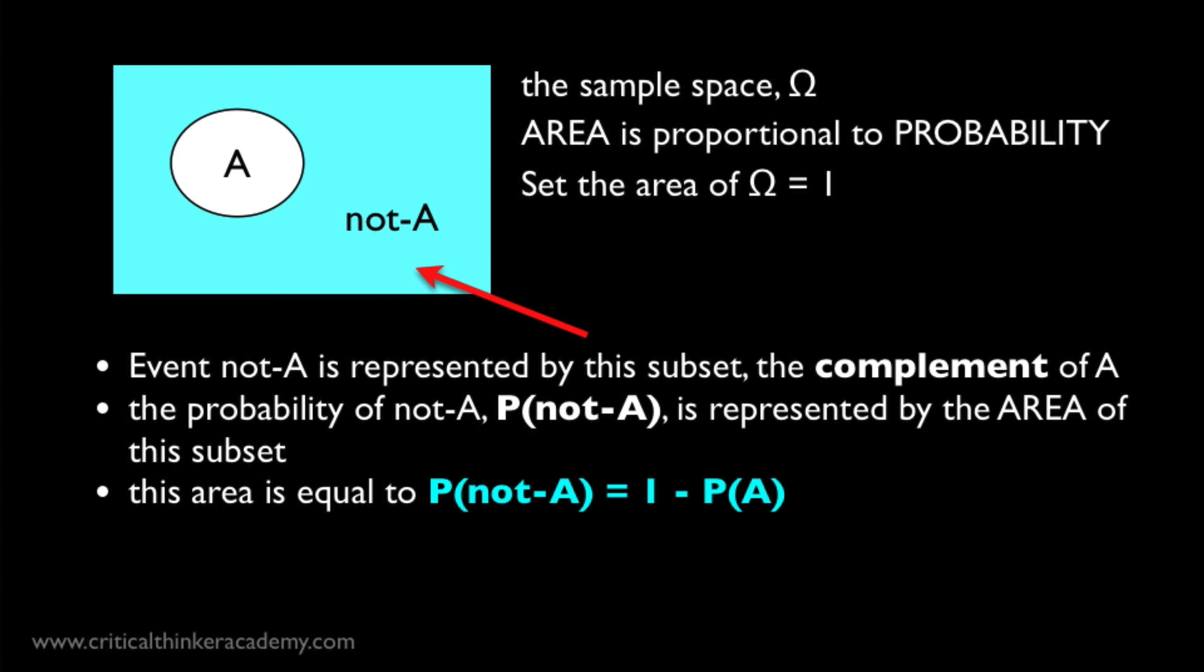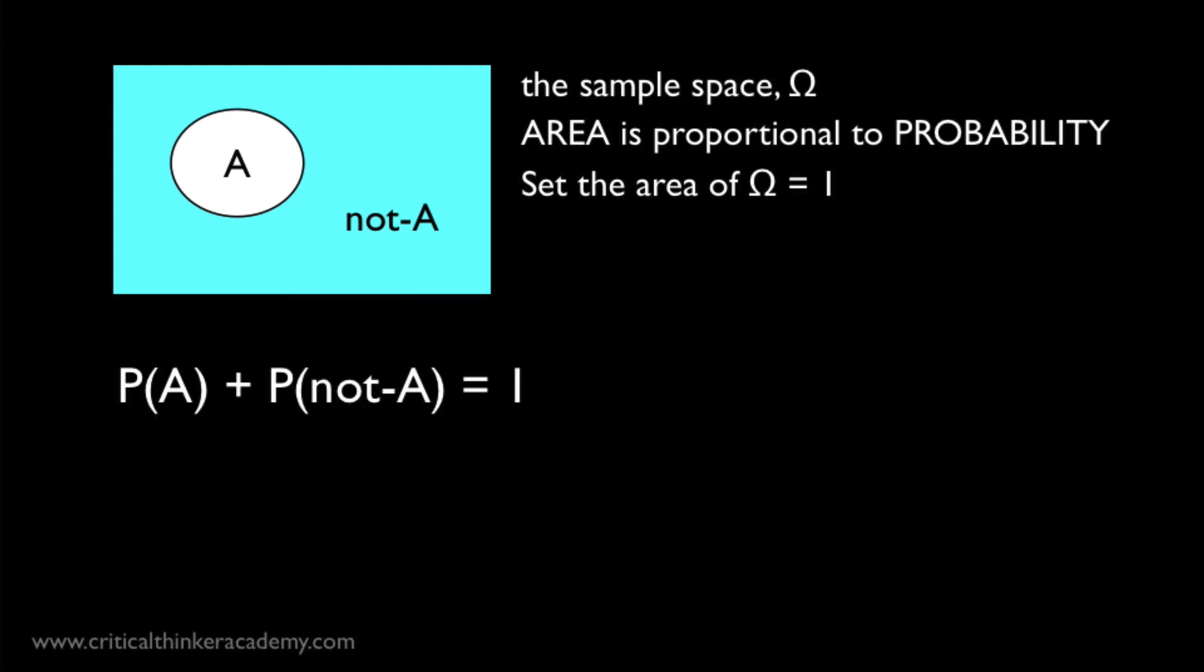Now from this, we can see a couple of useful relations. First, as we've seen, when we conjoin or take the union of A and NOT A, we recover the whole sample space, which has probability 1. This simply involves adding up the areas, and they fit together like the pieces of a jigsaw puzzle.